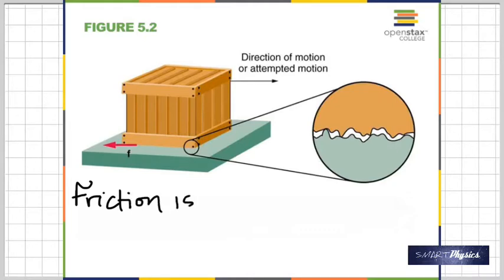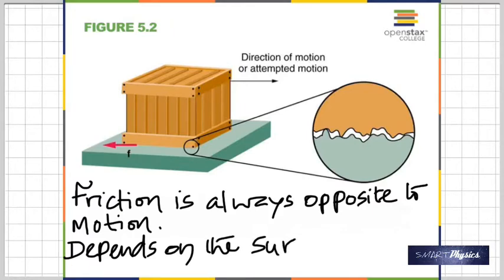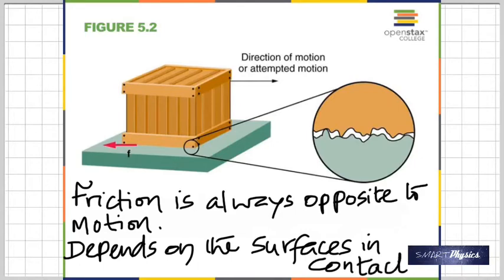Friction is always opposite to the motion — if you try to move it to the left, friction will be to the right, and vice versa. Friction depends on the nature of the surfaces in contact: whether it's wood on glass, tires on a dry road, or tires on a wet road after rain. The type of surfaces matters.